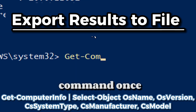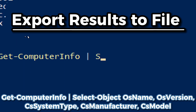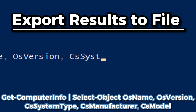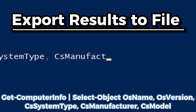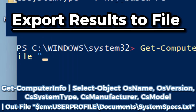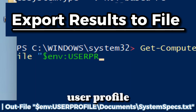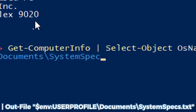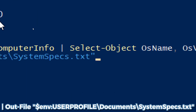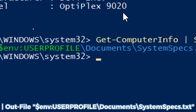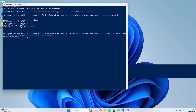To export the results to a file for documentation or remote support, type the command once again and include: Out-File $env:USERPROFILE\Documents\system_specs.txt. This saves the output to a system_specs text file in your Documents folder.